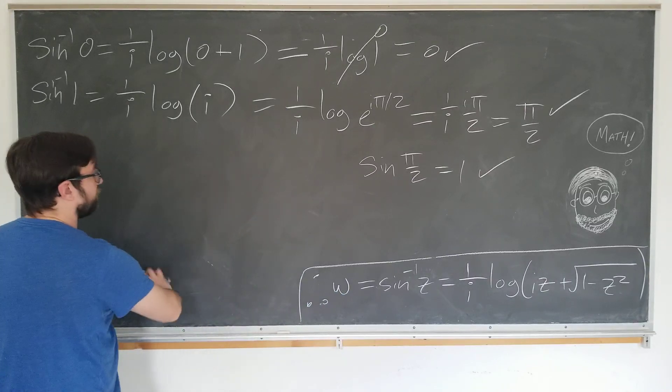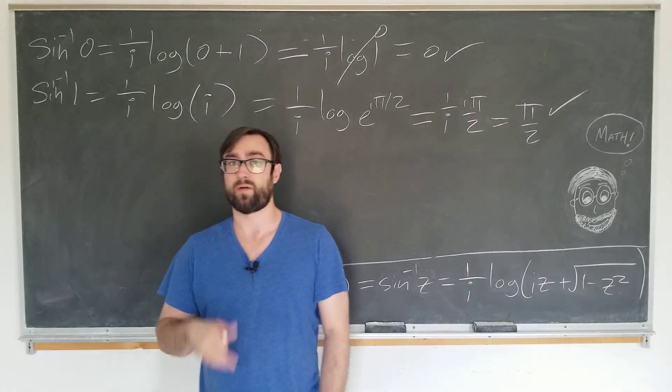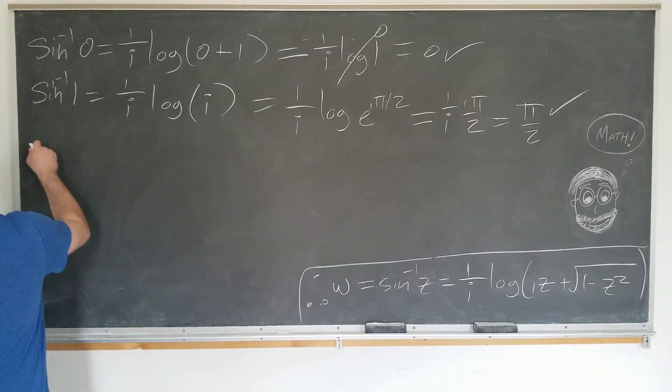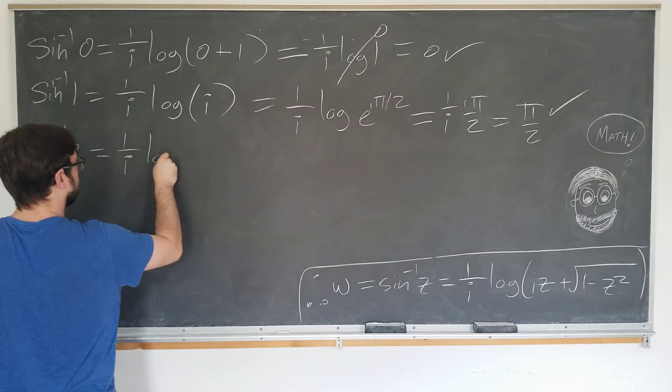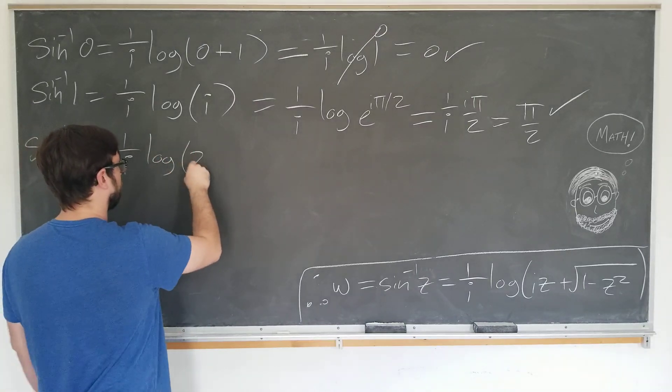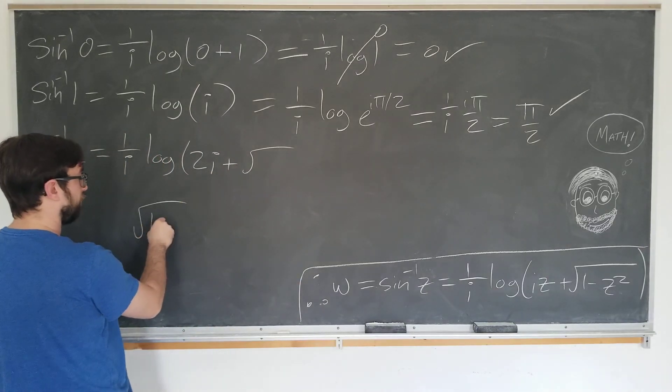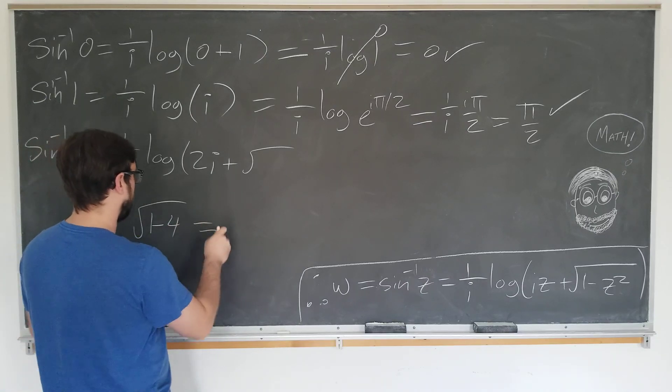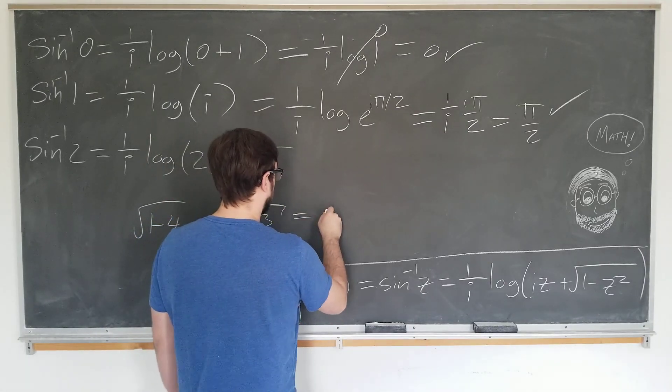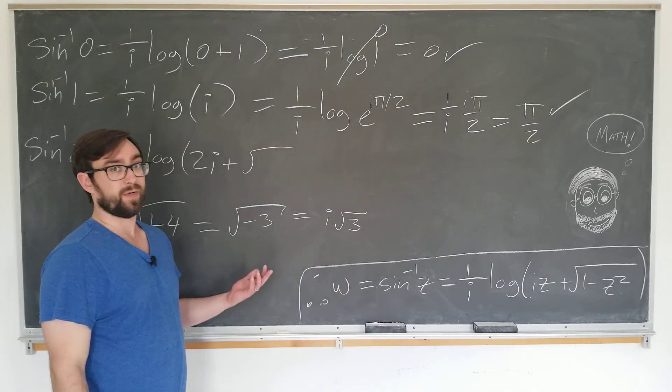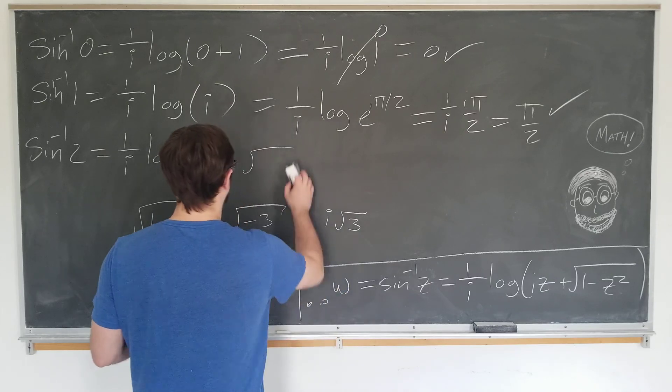And now we're finally equipped to calculate the value that we wanted in the first place. We can now calculate our hopefully complex value, inverse sine of 2, to be 1 over i natural log of 2i plus the square root. Square root of 1 minus 2 squared, which is 4, which is the square root of minus 3, which is simply i square root of 3. Make sure not to make the same mistake I did and write it as 3i.